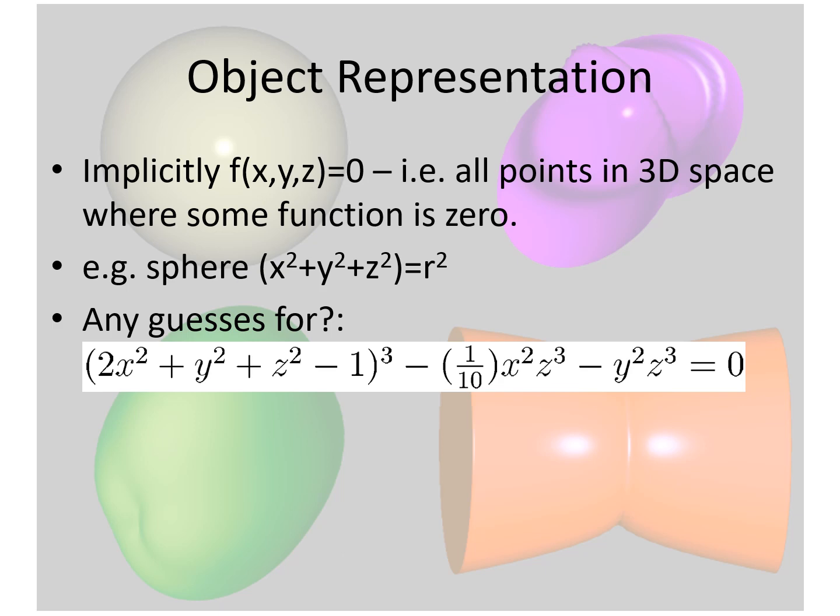The implicit representation defines an object using an equation which takes the form of f of x equals 0, where in this case x is a 3D point. For example, a sphere can be defined as x squared plus y squared plus z squared minus r squared equals 0. One problem with implicit representation is that it is difficult to go from arbitrary objects to equations. If we look at the objects in the background, it would be difficult to arrive at the equation of their implicit representation.